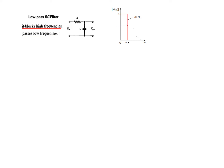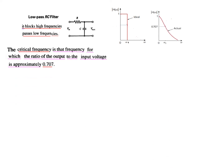The ideal filter would multiply the signal by one up to a certain frequency — meaning no attenuation — and then multiply by zero after that frequency, so no signal passes. But the actual filter is not like that; it has a gradual rolloff. A reference point has been defined: wherever the output voltage is 0.707 (or 1/√2) of the actual value, that is called the critical frequency or cutoff frequency.